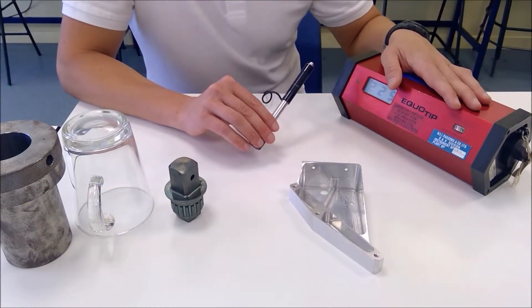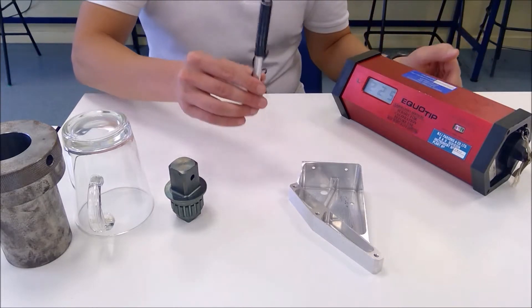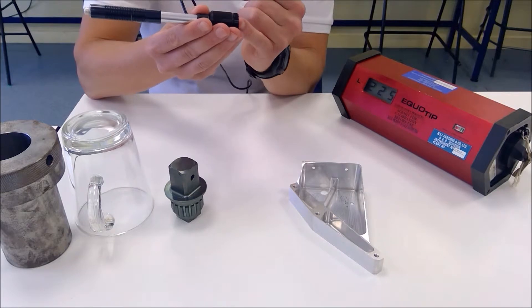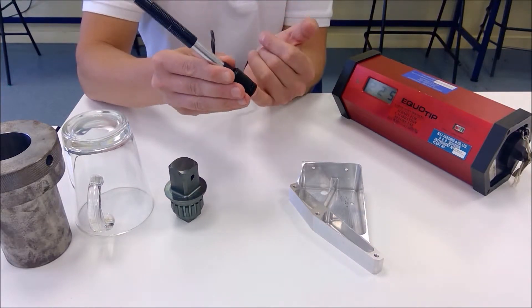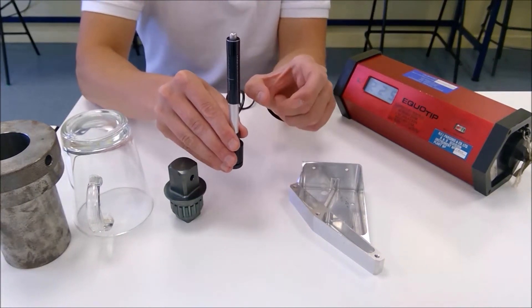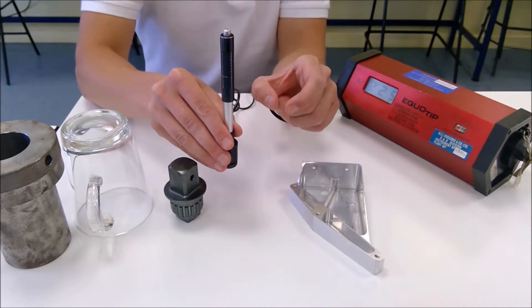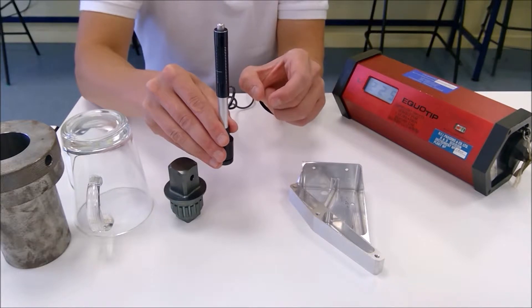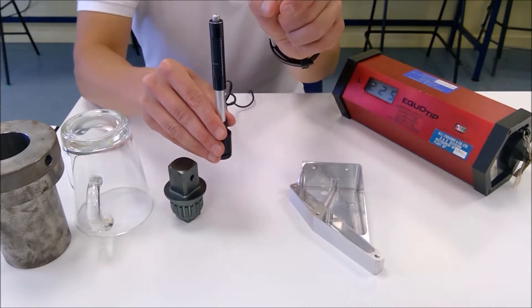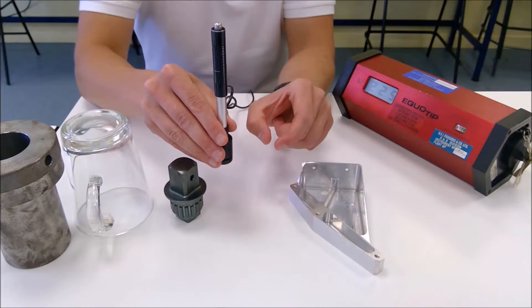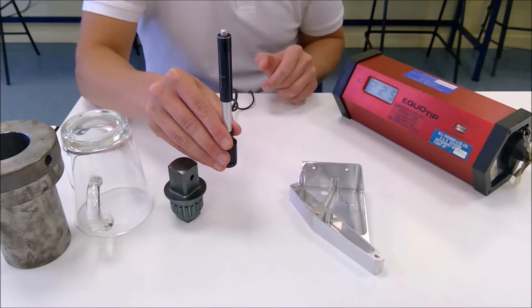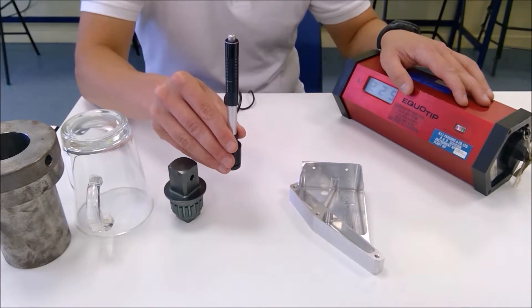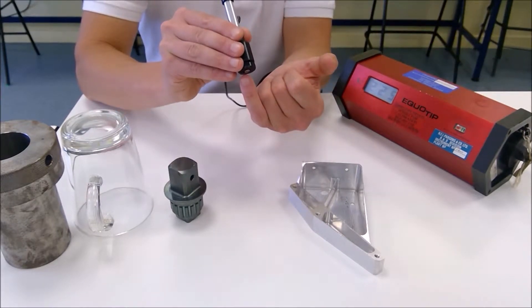So if we look at this hardness tester a little bit more closely then what we have is a probe and inside that probe there's an insert or a pickup, similar to a ball bearing. Essentially, if you can imagine when we drop a ball bearing onto a surface, if that surface is hard that ball bearing is going to bounce and reverberate. If that surface is soft then the surface is going to absorb some of the energy from the ball bearing and it's going to rebound or reverberate less. That's basically what this machine's doing—it's measuring the amount of rebound in that pickup or that ball bearing.